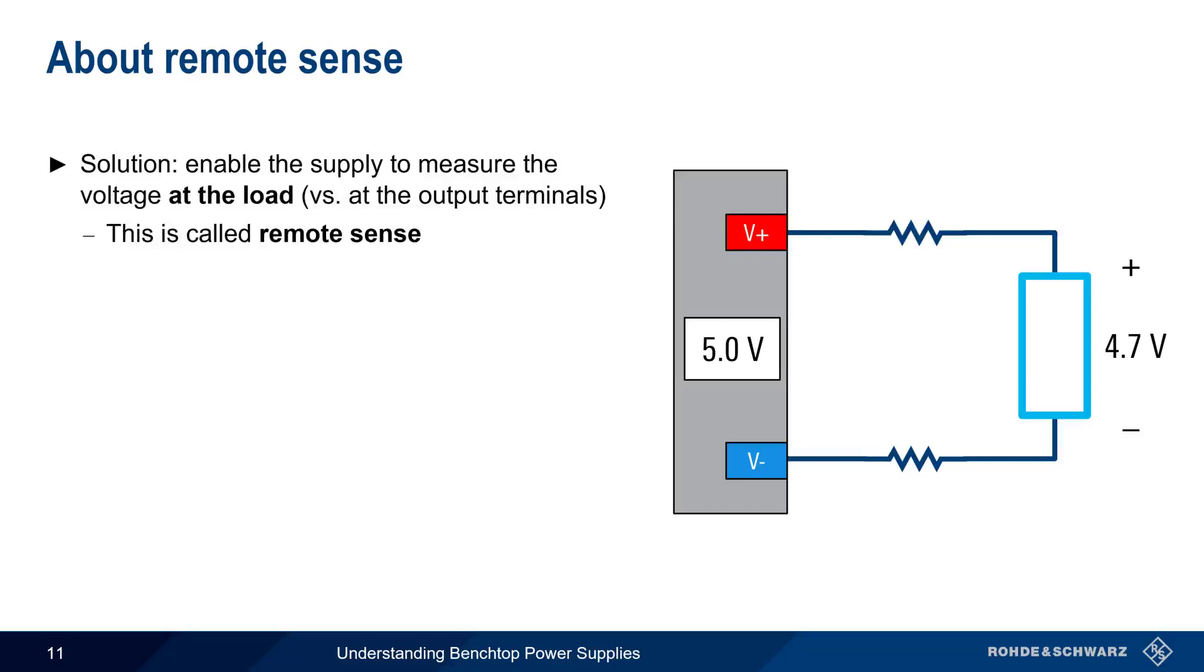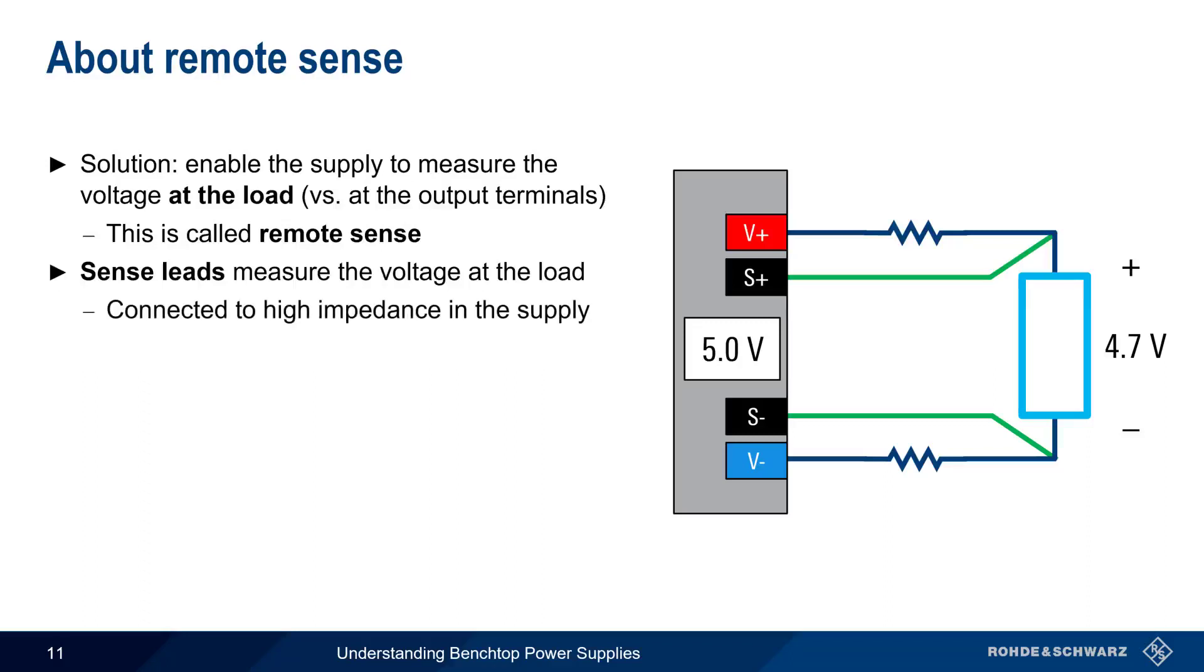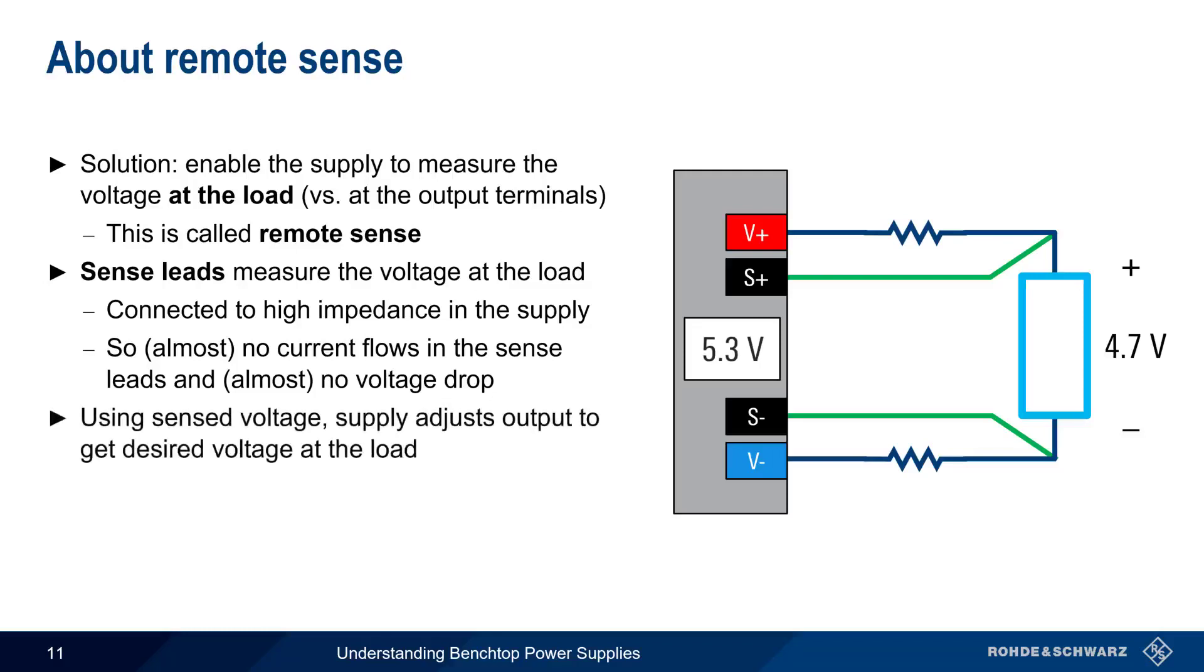In remote sense, an additional set of so-called sense leads are used to measure the voltage as close as possible to the load. These leads are connected to a very high impedance in the supply, meaning that almost no current flows, and therefore there is almost no voltage drop in these sense leads. Using the remotely sensed voltage, the supply can then adjust its output to obtain the desired voltage at the load. Here, the supply compensated for the 0.3 volt drop by increasing output voltage to 5.3 volts. Note that this is an automatic, dynamic process. Once the sense leads have been connected and remote sense has been enabled, the power supply will automatically and continuously adjust the output voltage as needed.